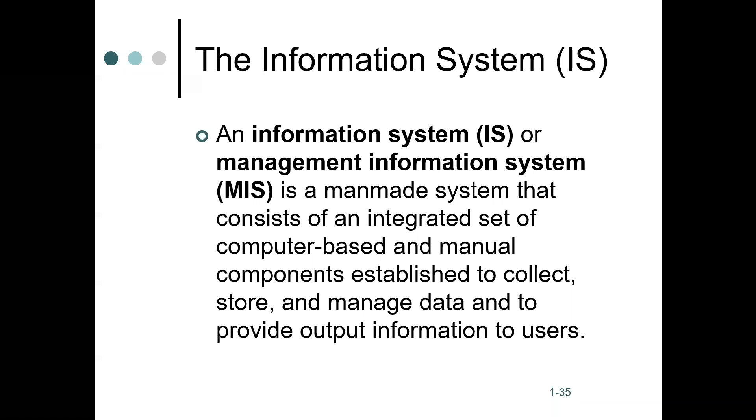This is not just a computer. The wrong impression sometimes is that when we say information system, it's just computer or technology. Actually a system can include manual components. A system is composed of five components: users, hardware, software, data, and process.